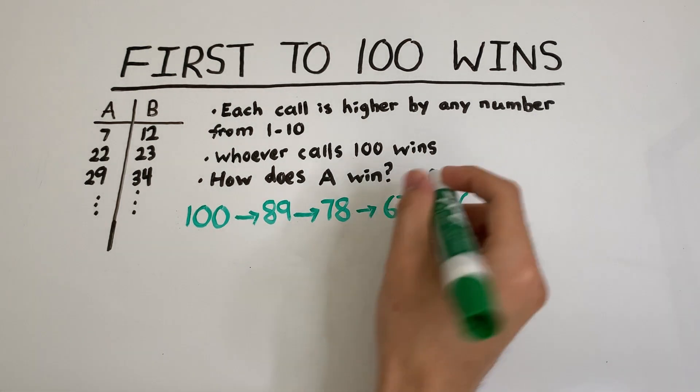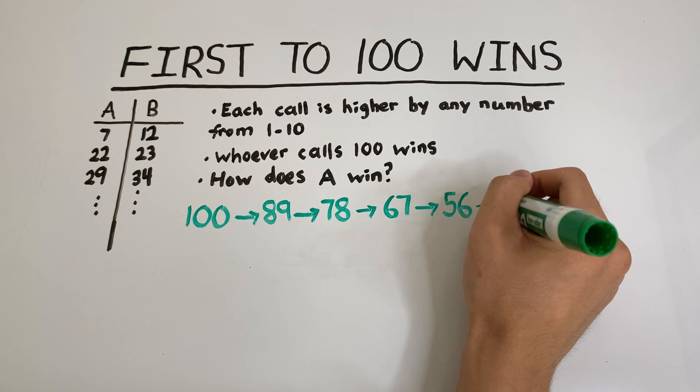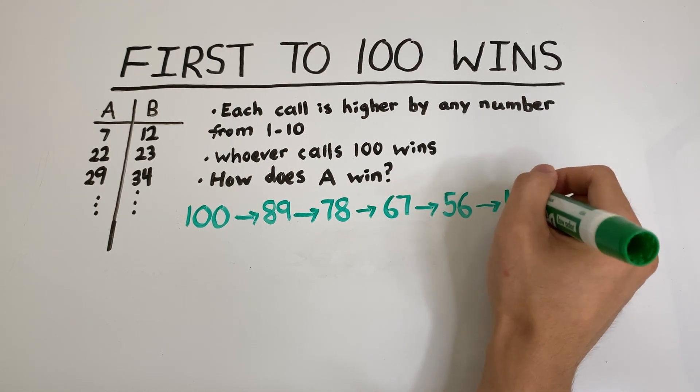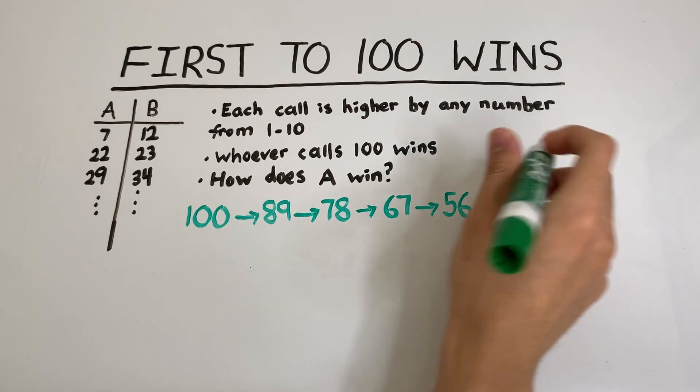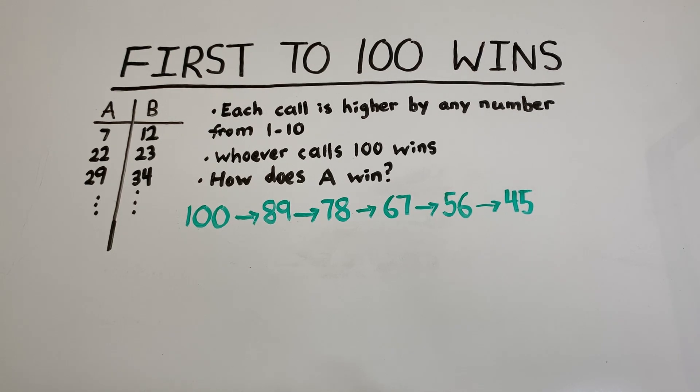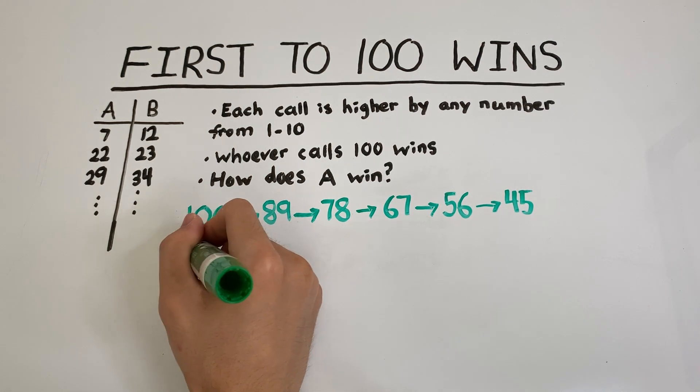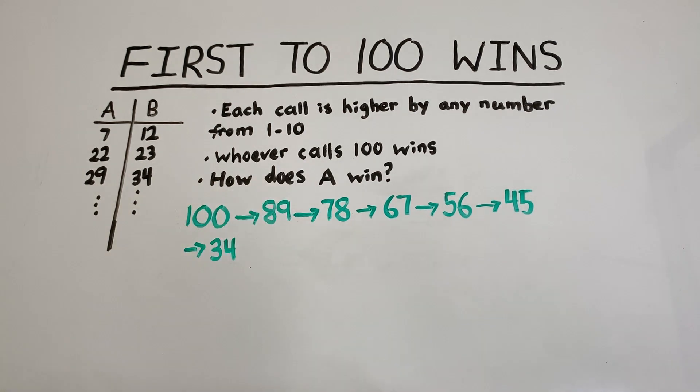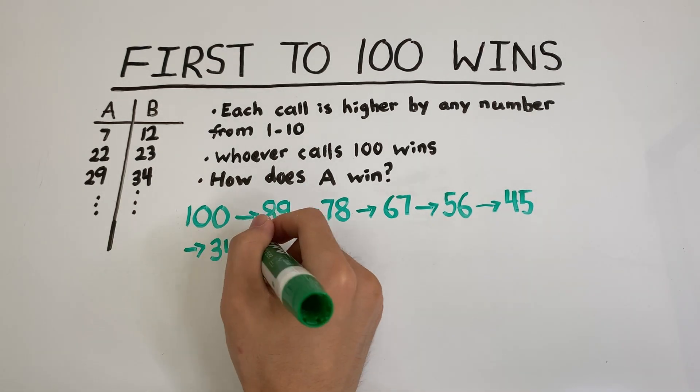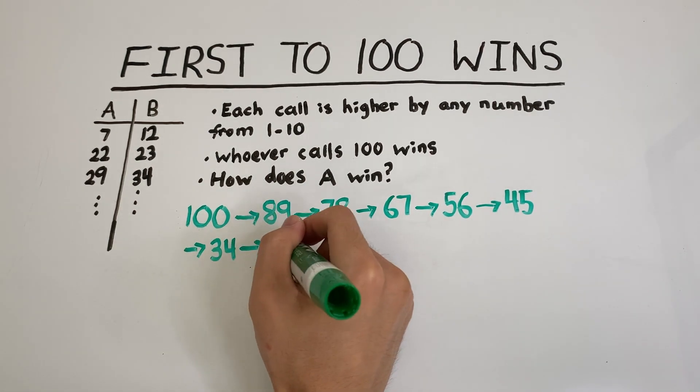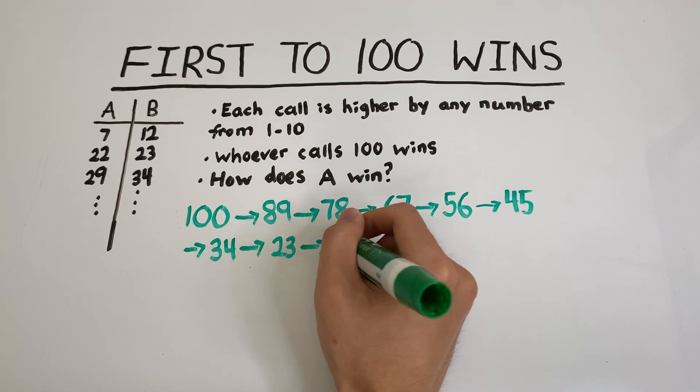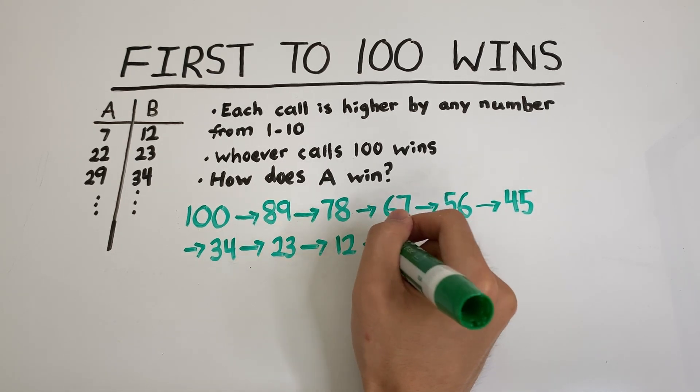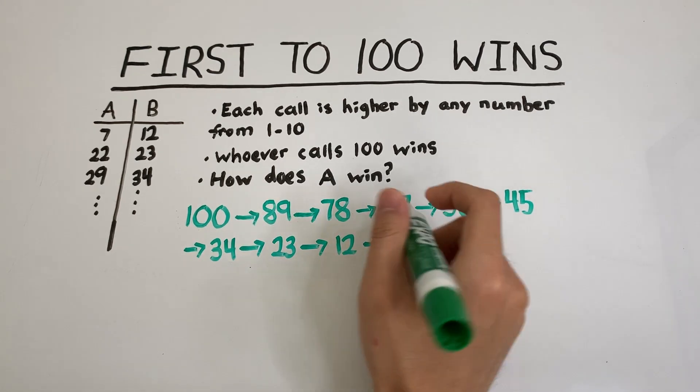So for A to call 56, the number before should be 45, because then at most B can call 55. To call 45, we need to call 34, then 23, then 12. And we're back to the start at 1.